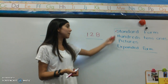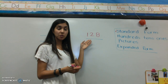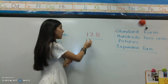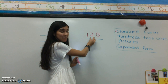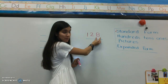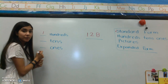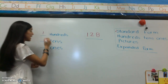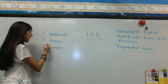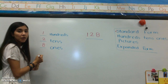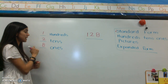Now the next way that I'm going to represent my number is in hundreds, tens, and ones. We need to be focusing on each digit, the individual digits, and what place they are in. So we know that the one here is in the hundreds place, the two is in the tens place, and the eight is in the ones place. So because my one is in the hundreds place, I know that I have one hundred. Because my two is in the tens place, I know that I have two tens. And because my eight is in the ones place, I know that I have eight ones. So this is what the number looks like when I'm representing the number of hundreds, tens, and ones: one hundred, two tens, and eight ones.